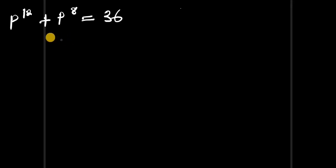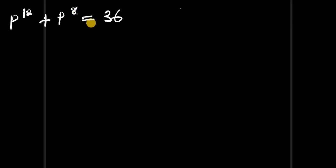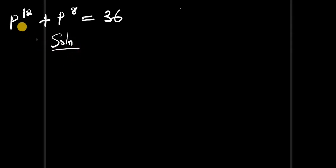Hello, how to solve this nice exponential equation. We have p to the power of 12 plus p to the power of 8 equals 36. We have a solution, so p to the power of 12 we can rewrite this.